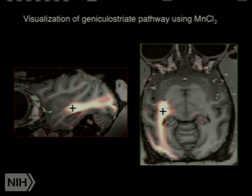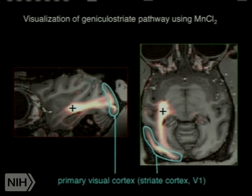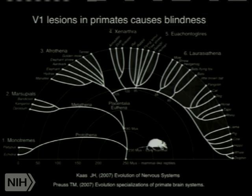We can visualize this pathway using an almost miraculous property of manganese chloride: cells take it up thinking it's calcium, it's transported in long axons, and it's visible in MRI. We inject manganese into the lateral geniculate nucleus, wait a couple of days, and image it. This shows the optic radiations in sagittal and horizontal sections, passing manganese chloride back into the primary visual cortex — the pathway visualized in the macaque monkey. This raises the question of whether primates can see without V1. Looking at an evolutionary tree, nearly all mammals that have been tested over the last 50 years have been examined for this ability.